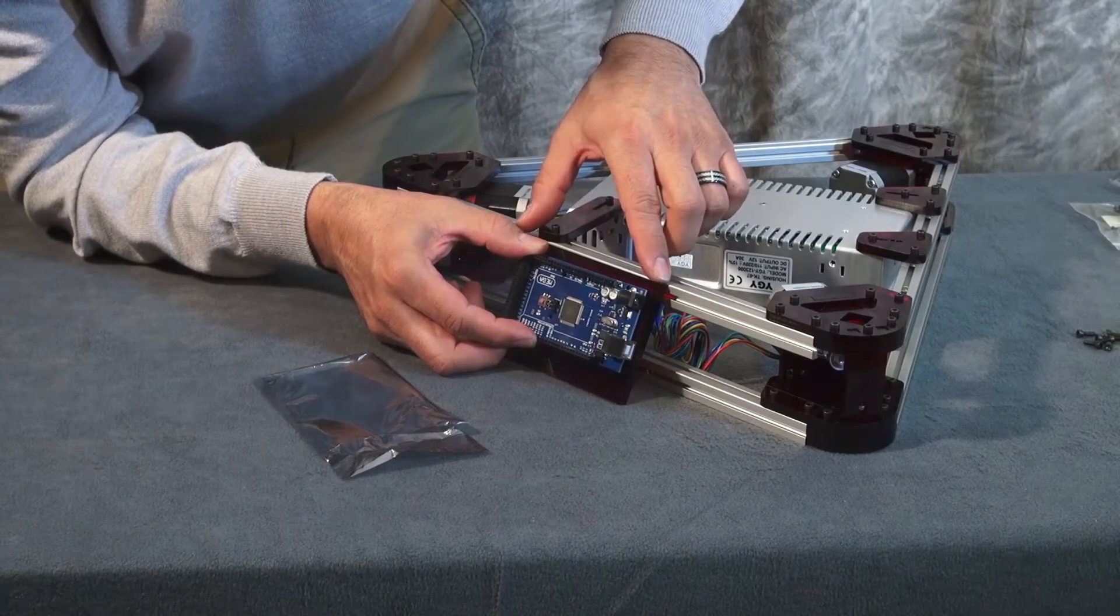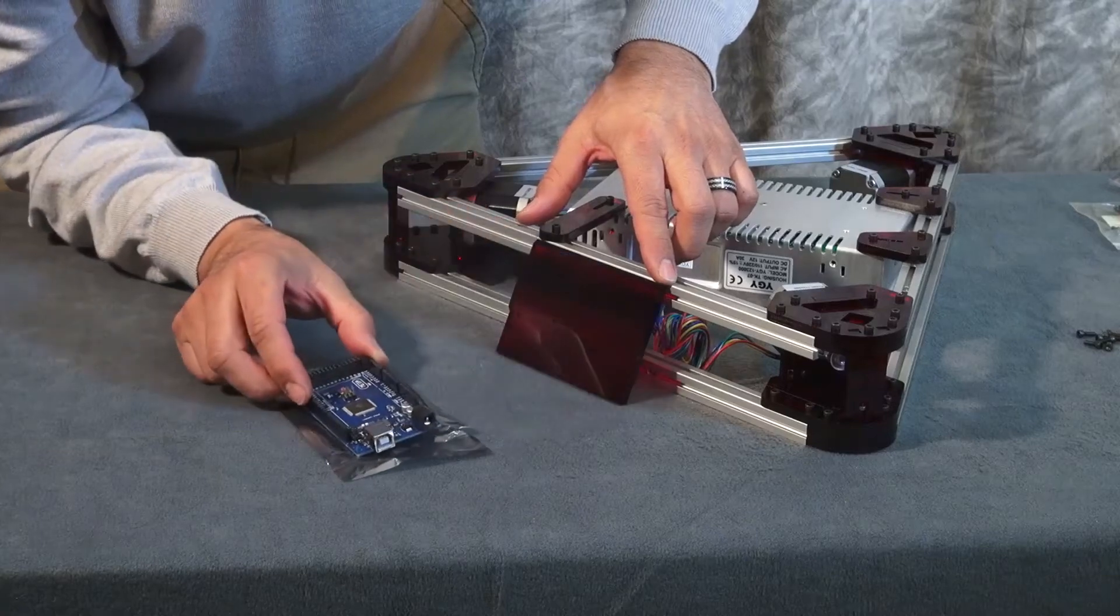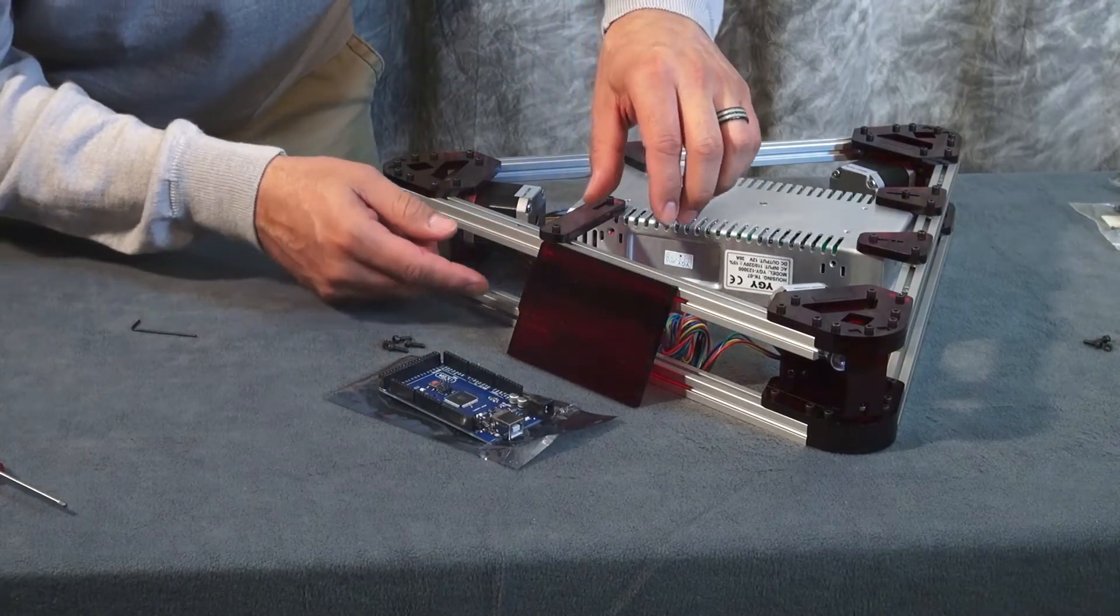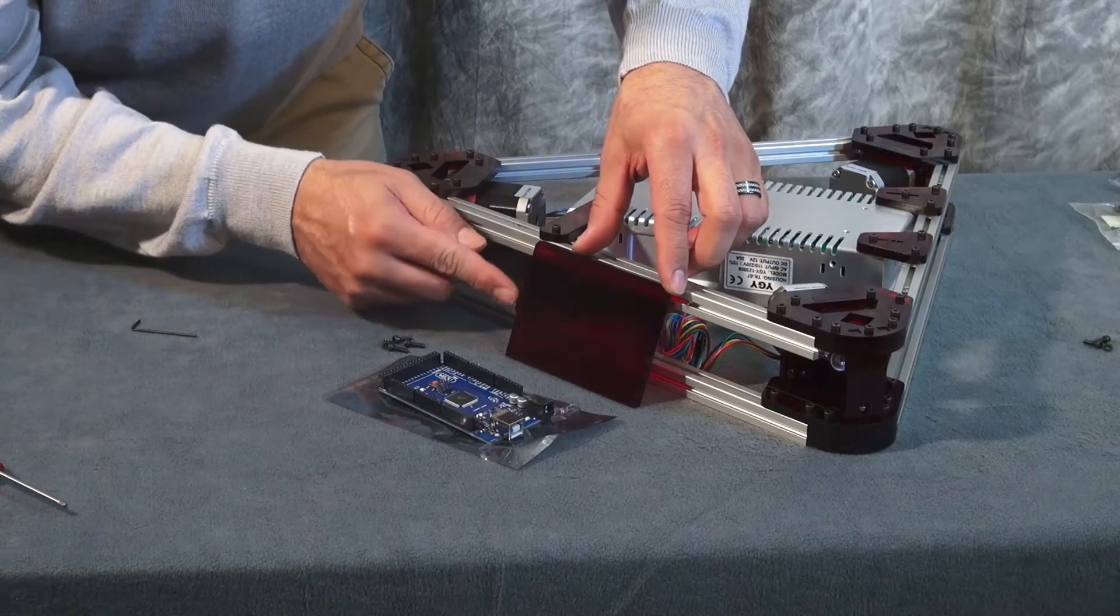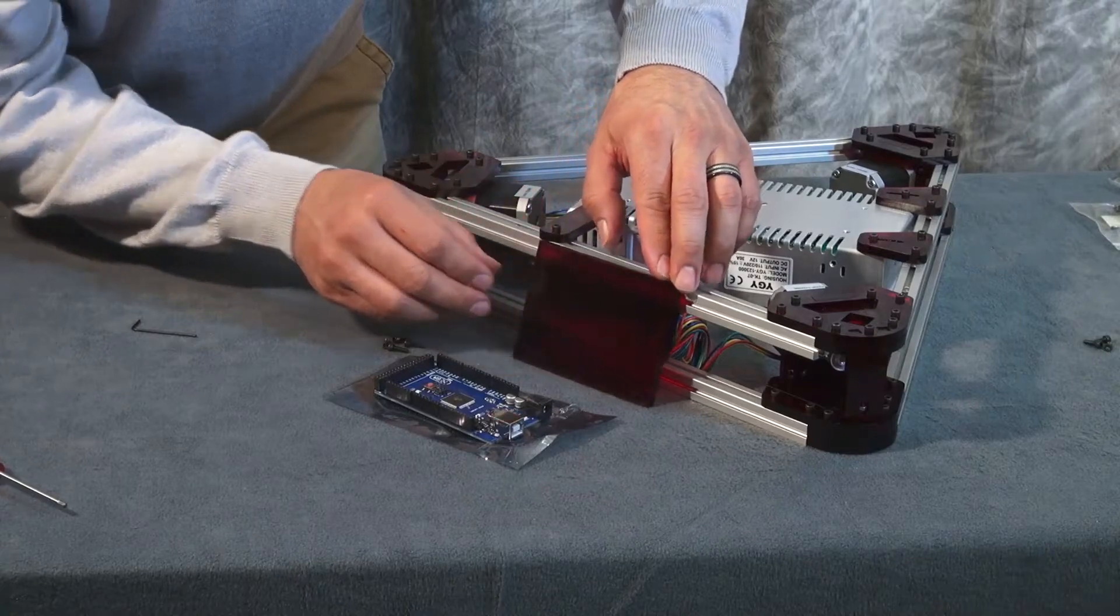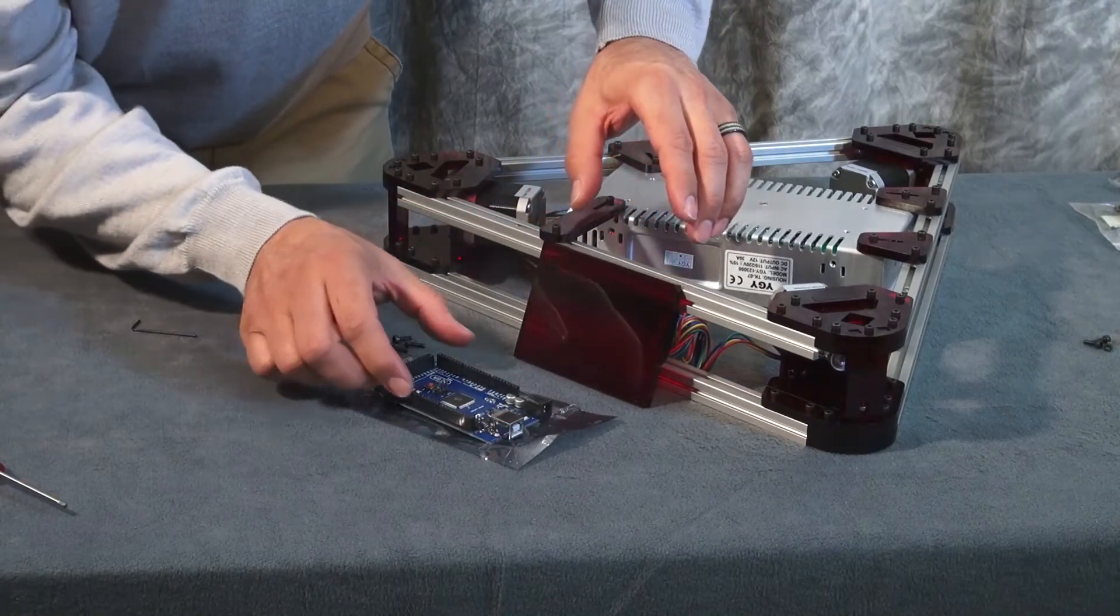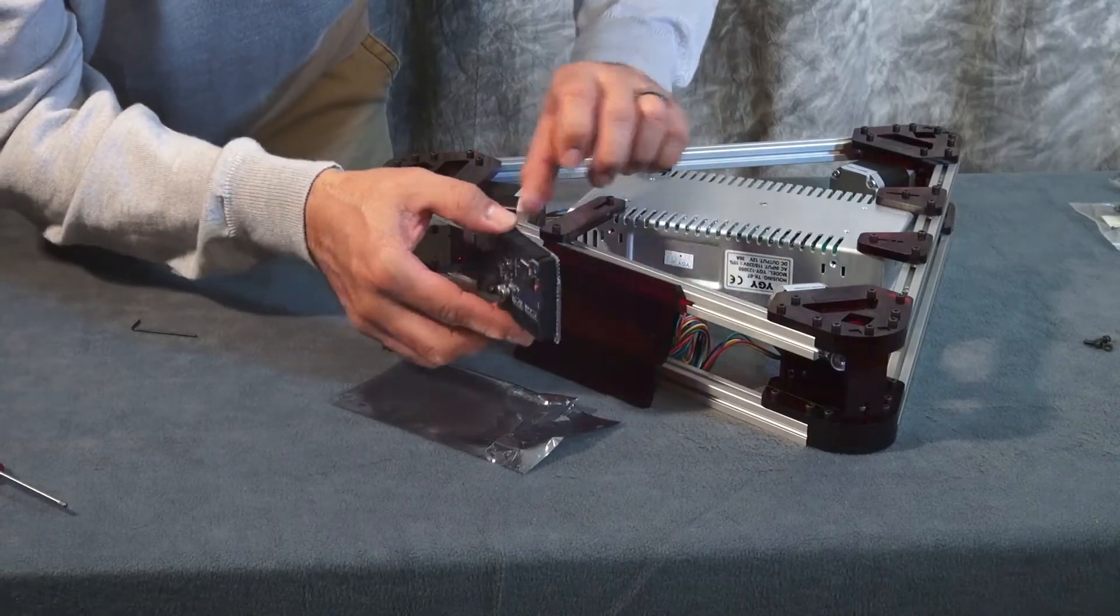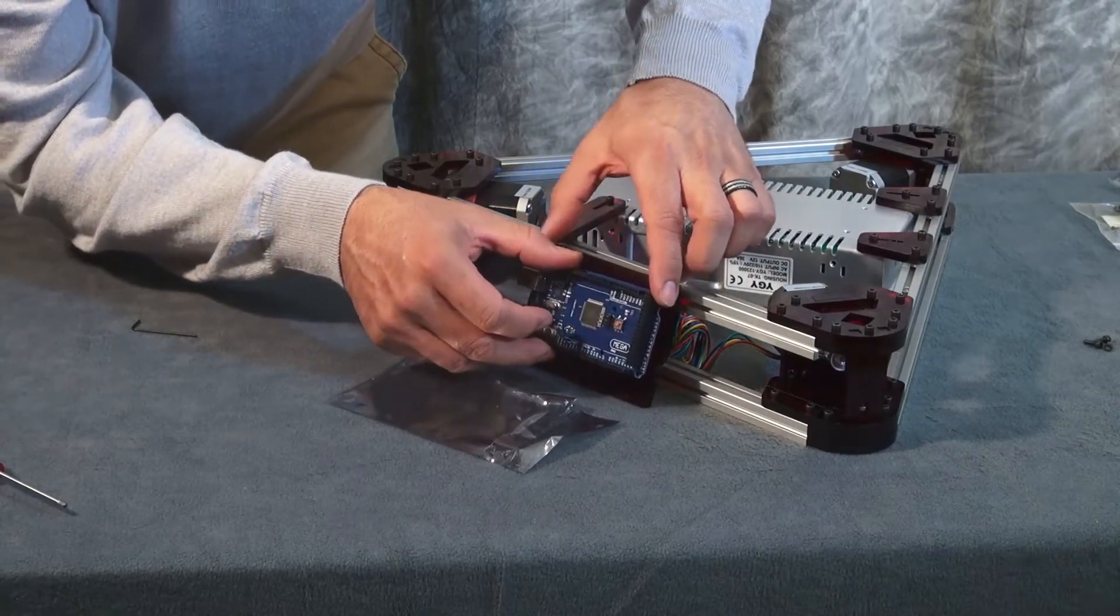And again, this is the non-LCD way. To install the LCD version with the Arduino board, you want to make sure the notch is pointing to the front of your base. And you would align your Arduino board with the two holes here. And the USB port is going to be pointing towards the back.